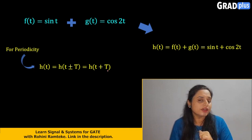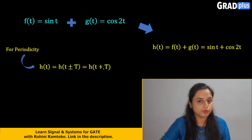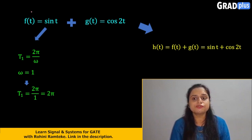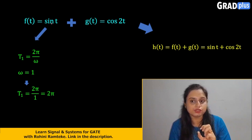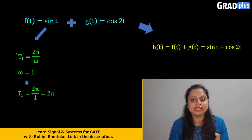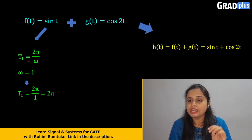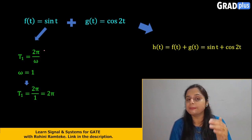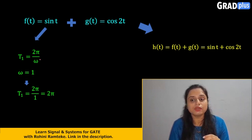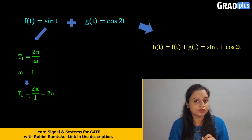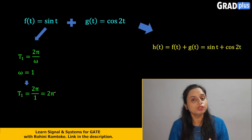Follow the process: consider the signals individually first. Consider f(t) individually. Find out its time period — let us say that time period is denoted by T1. The formula for finding the time period is 2π divided by ω. In this signal, the value of ω is 1. Substituting the value of ω, we get T1 = 2π.